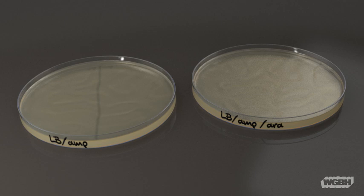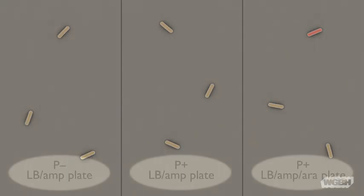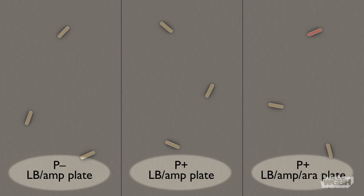The plate on the left contains the antibiotic ampicillin alone, and the plate on the right contains ampicillin and the sugar arabinose. On the left is a negative control plate where the transformation reaction was done without any plasmid. In the middle is another negative control where transformation was carried out with plasmids, but where the gene of interest will not be expressed since the growth medium lacks the arabinose inducer. On the right is the permissive growth condition with arabinose that will let us identify successful transformations.